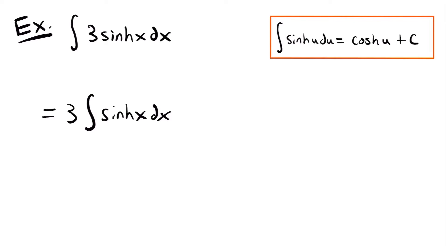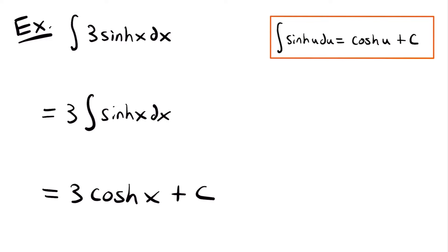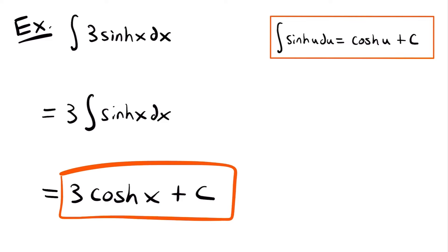We can use the integration rule to integrate this function directly. This integration rule can be applied using u-substitution for more complex integrals, or when you have a hyperbolic function with something other than x inside it. In this case, since we just have sinh(x) dx, we don't need u-substitution. We can integrate directly into the hyperbolic cosine function, giving us 3·cosh(x) + c. That is the solution to this integral.